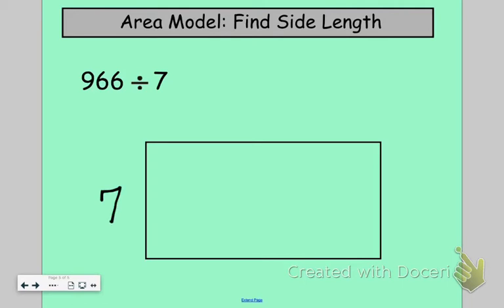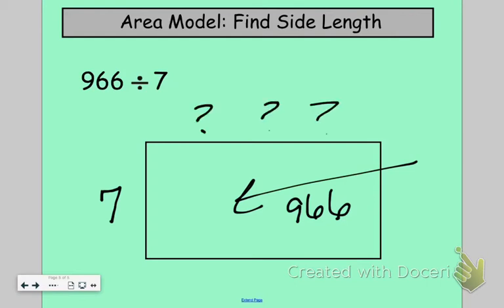And then I know that my area here is going to be 966. But what I don't know is what is this side length up here. So what I'm going to do is break it apart very similar to what I was doing with the partial quotients and kind of break this area up and try to start guessing on what this side length is.